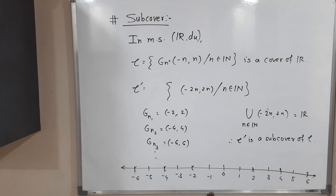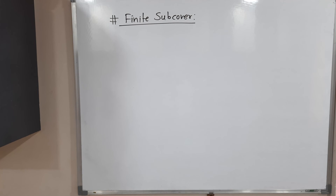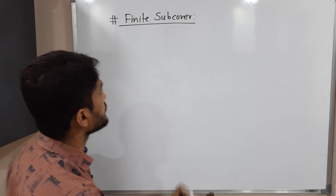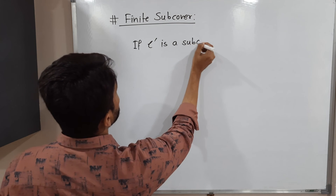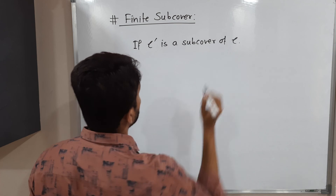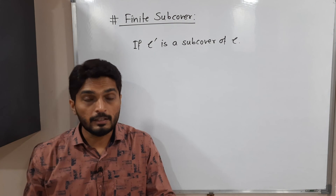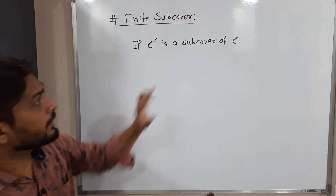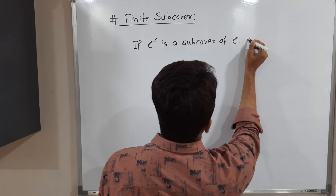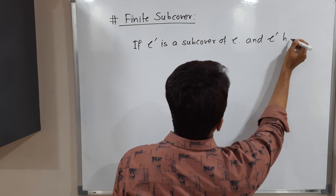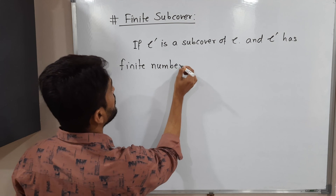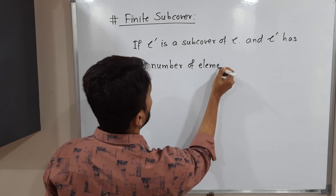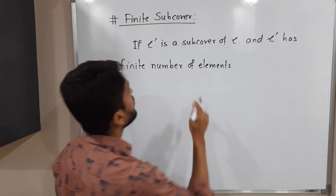The last concept is finite sub-cover. If script C dash is a sub-cover of script C for a metric space X, D, and that script C dash has a finite number of elements, then we call it a finite sub-cover.